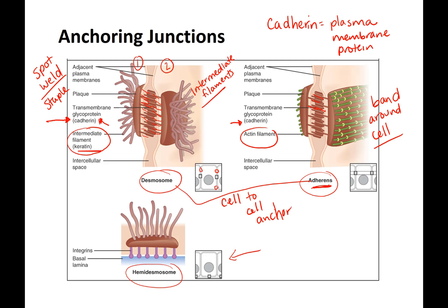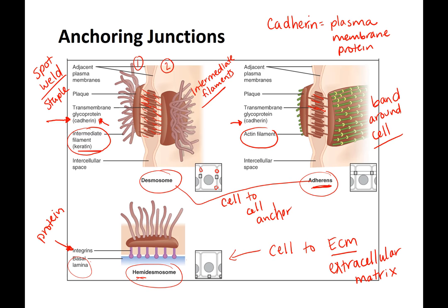Hemidesmosomes are cell to ECM — extracellular matrix. They use a totally different type of protein called integrins. They are like a desmosome but hemi — half — because instead of interacting with another cell, they interact with the extracellular matrix, here called the basal lamina. So they are only on one end of the cell, spot-welding it to the environment.